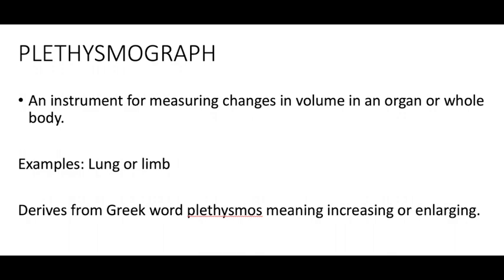We should think of a pulse oximeter as a plethysmograph — that is, an instrument for measuring changes in volume in an organ or whole body. Plethysmographs, for example, are used for measuring changes in lung volumes or limb volumes. The word derives from the Greek word plethysmos, meaning increasing or enlarging.